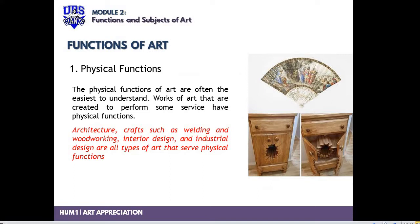Let's begin with the first function: the physical function. This is the easiest to understand among the three. Works of art that are created to perform some service have a physical function. For example, a fan — it can be used for fanning, as a shield from the sun, or even for swatting things. Same with a cabinet — it stores belongings, or serves as a place to put a vase. It performs some service. This is what we call the physical function.